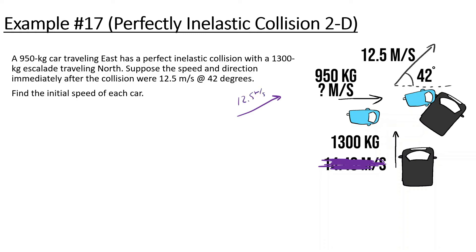After they collide, they're going 12.5 meters per second at 42 degrees. We can find the final velocity components: 12.5 times cosine of 42 gives 9.29 meters per second in the X direction, and 12.5 times sine of 42 gives 8.36 meters per second in the Y direction. Using those, we can find how fast each car was originally going.